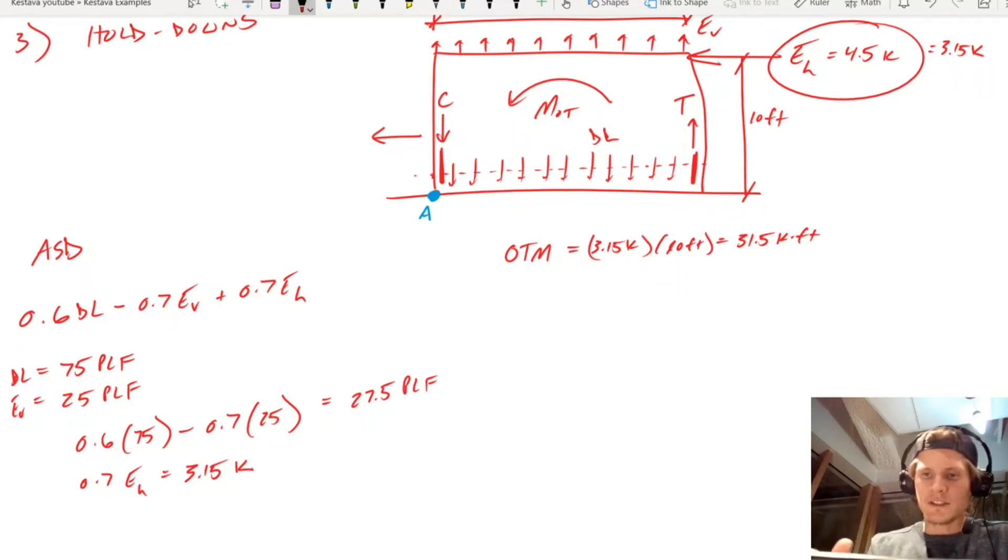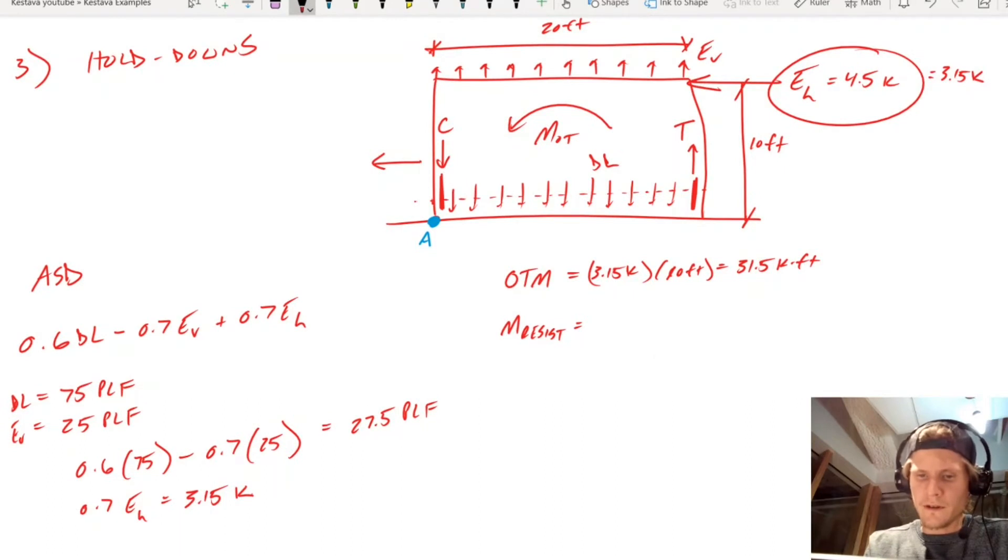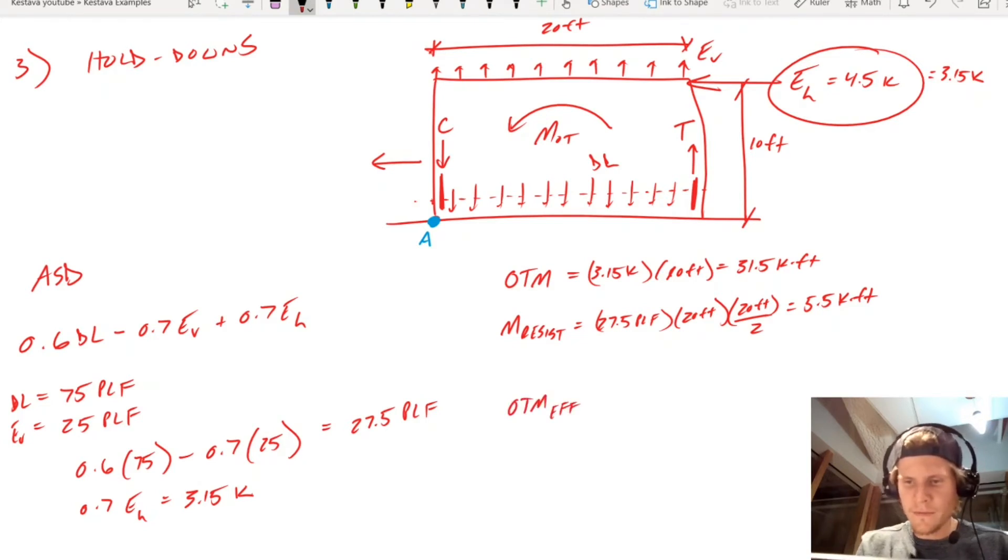And then you have a counteracting moment, which is going to be M resist, which is going to equal your dead load of 27.5 plf times the full length of your wall, which is 20 feet, times 20 feet over 2, and then divide it by 1000 to get it into kip-feet. So that's going to get us 5.5 kip-feet.